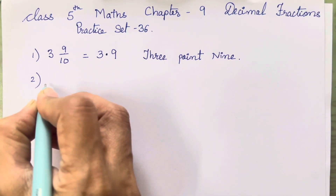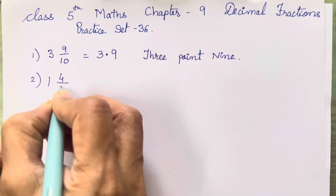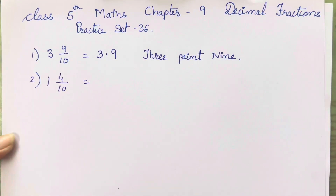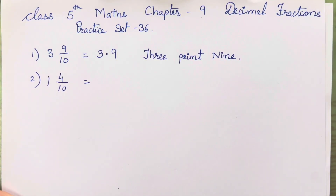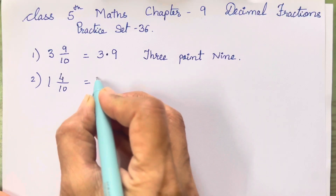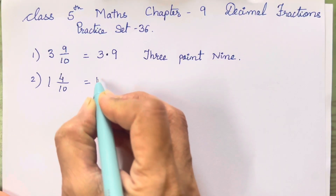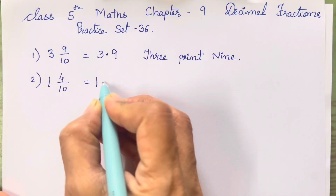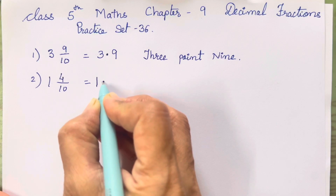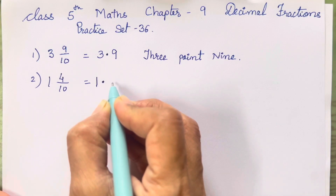The second one is 1 4/10. I will show you hundreds and thousands at the end so it won't get confusing, but it will serve as a revision for the next exercise. Now 1 has to be on the left hand side of the decimal point, and on the right hand side of the decimal point